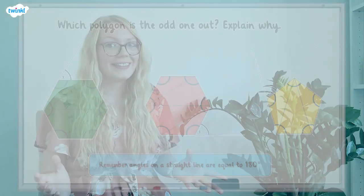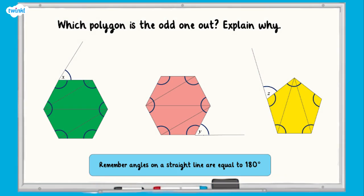Let's recap our learning so far. Here are three regular polygons with three external angles to calculate: x, y, and z. Can you use your knowledge of angles in regular polygons to calculate the exterior angles? One of these polygons will be different to the others, and it's your job to find the odd one out. Remember that angles on a straight line are equal to 180 degrees. Pause the video here while you calculate all the missing angles.